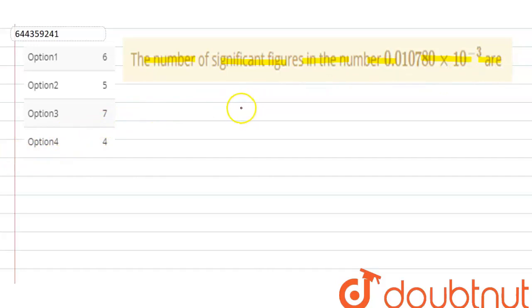In this question, the number is given as 0.010780 × 10^-3. So to determine the number of significant figures, according to the rule, this 10 to the power any number should not be counted in measurement of significant figures.